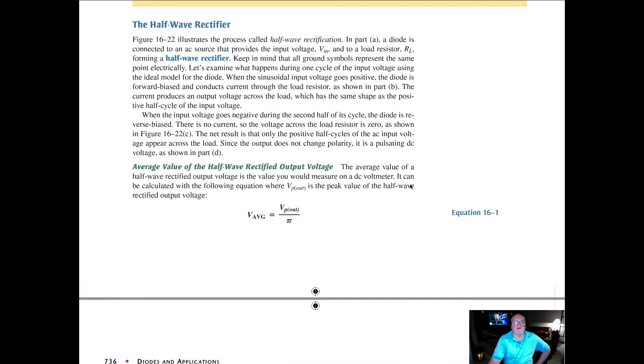When the sinusoidal input voltage goes positive, the diode is forward biased and conducts current through the load resistor. The current produces an output voltage then across the load, which has the same shape as the positive half cycle of the input voltage.